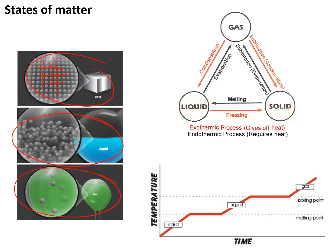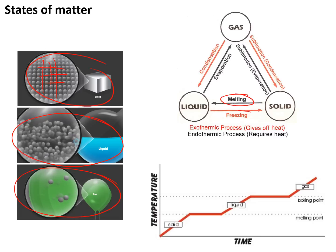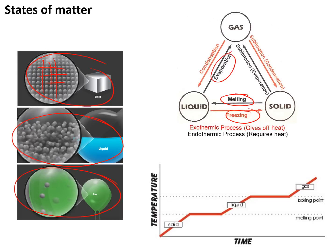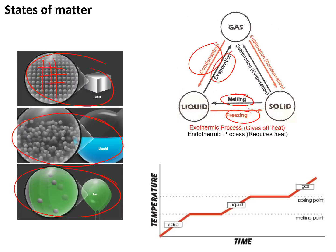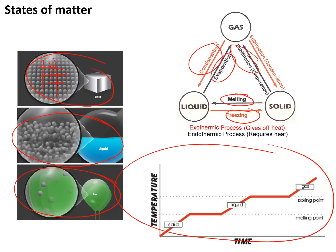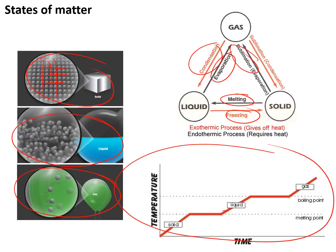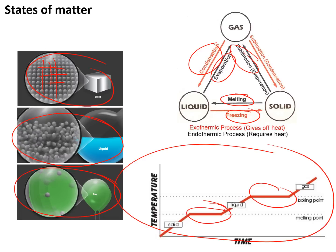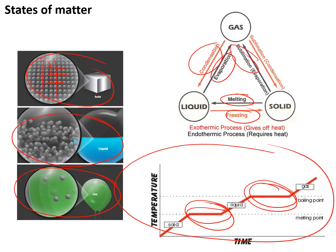State changes. Solid to liquid is called melting. Liquid back to solid is called freezing. Liquid to gas is called evaporation or boiling. Gas back to liquid is called condensation. Solid straight to gas is called sublimation. Gas back to solid is called deposition. If you graph the temperature changes as you heat something, you get a steady increase in temperature but with two flat sections — the first flat section is melting, the second flat section is boiling.